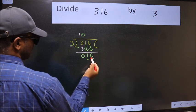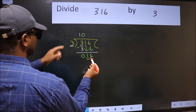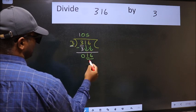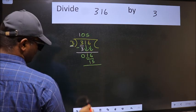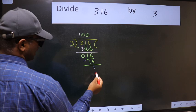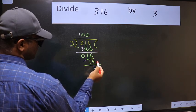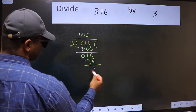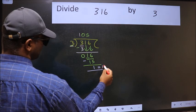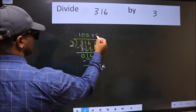Now 16. A number close to 16 in the 3 table is 3 times 5, 15. Now we should subtract. We get 1. No more numbers to bring it down. So this is where we stop. This is our remainder and this is our quotient.